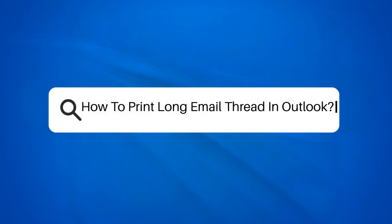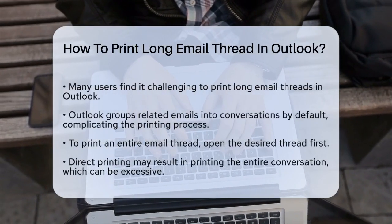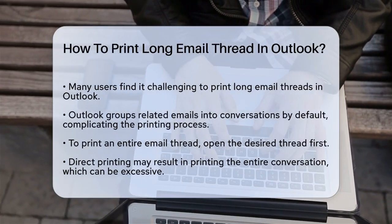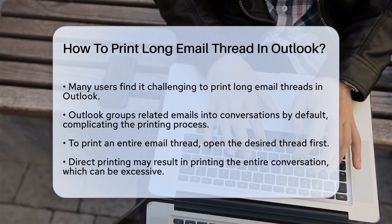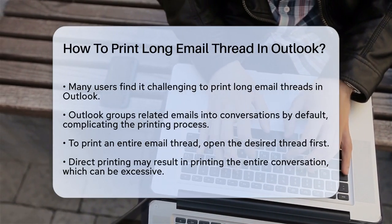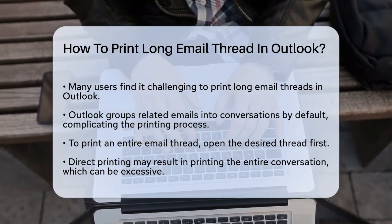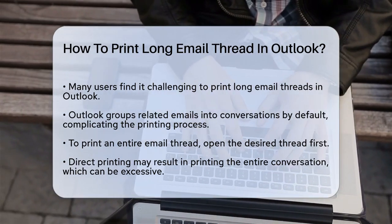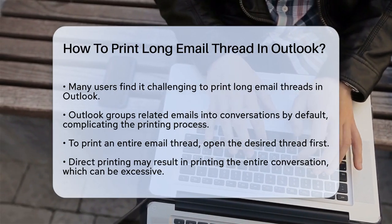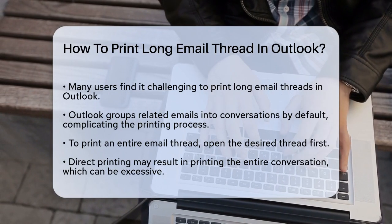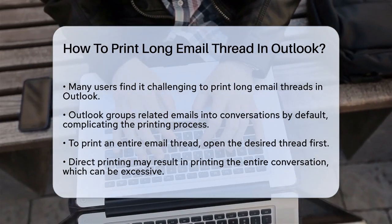How to Print Long Email Thread in Outlook. If you're struggling to print a long email thread in Outlook, you're not alone. Let's break down the steps to make this process easier. First, you need to understand how Outlook handles email threads. By default, Outlook groups related emails into conversations, which can make printing individual emails or the entire thread a bit tricky. To print an entire email thread, you have a few options. Here's the simplest way.